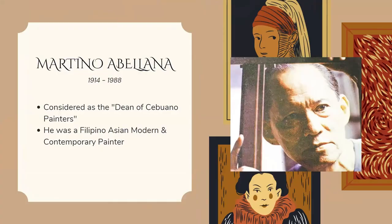Martino Abellana was a Filipino-Asian modern and contemporary painter. He polished his abilities under the guidance of renowned Filipino artist-painters Fernando Amorsolo and Guillermo Tolentino. Together with his friend and fellow painter Professor Julian Jumalon, Abellana helped found the University of the Philippines Cebu's Fine Arts Program, where he had the greatest impact and influence over subsequent generations of Cebuano painters.